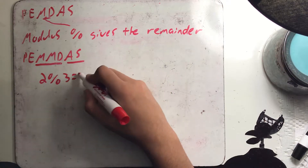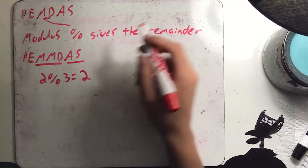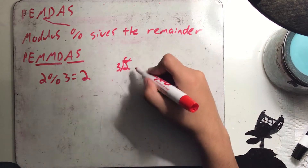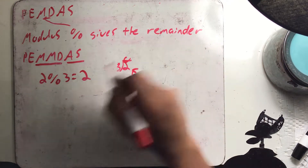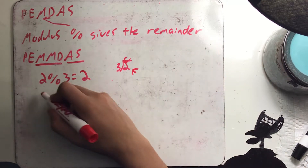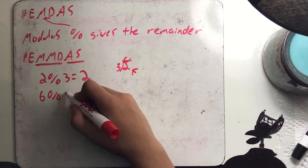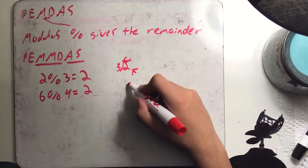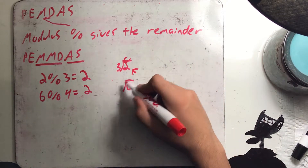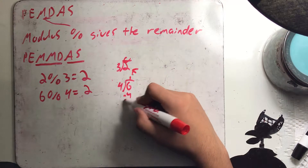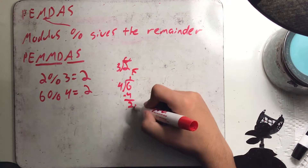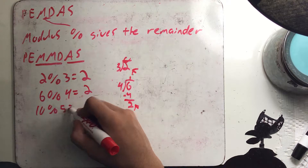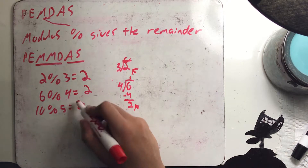Let's look at some modulus examples. 2 mod 3 equals 2, because 2 divided by 3 gives 0 with a remainder of 2. 6 mod 4 equals 2, because 6 divided by 4 gives 1 with a remainder of 2. 10 mod 5 equals 0, because 5 goes into 10 exactly two times.